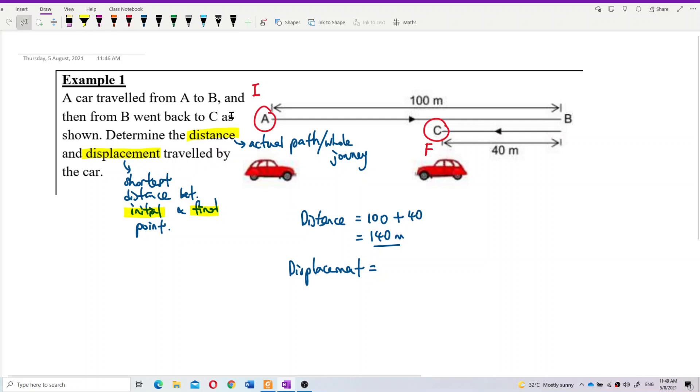So what is the shortest distance between A to C directly? From here to here, which is this one - this is the shortest distance. To find that, we just take 100 minus 40. So the shortest distance between the initial and final point is 60 meters.